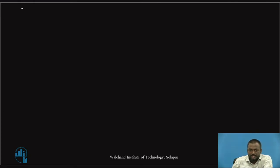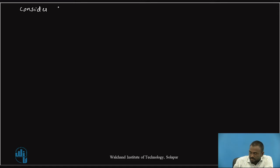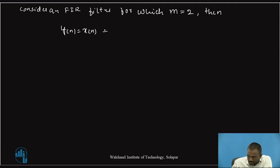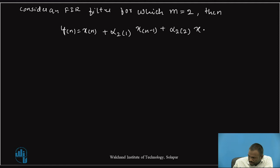In the last video lecture, we discussed how to draw the lattice structure for M equal to 1. Now, let us consider an FIR filter for which M is equal to 2. Then Y(n) is equal to X(n) plus alpha_2(1) X(n-1) plus alpha_2(2) X(n-2). Let us give this as equation number 6.